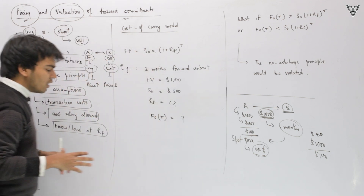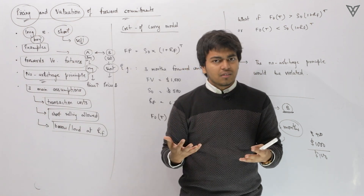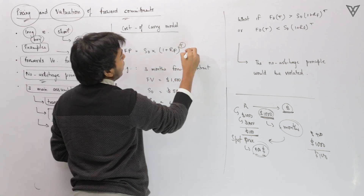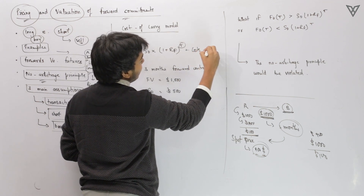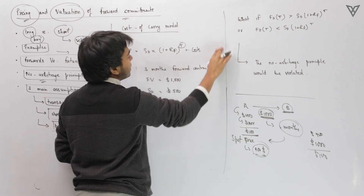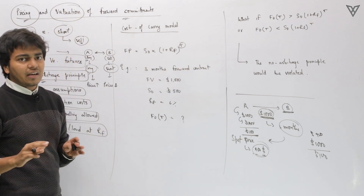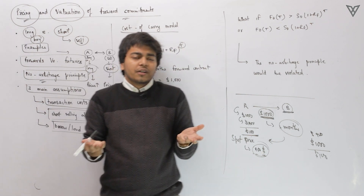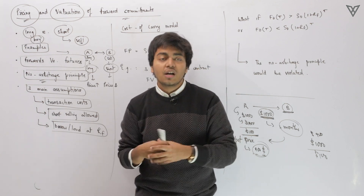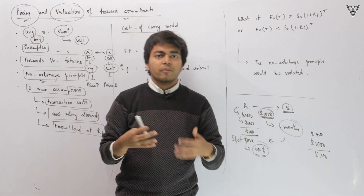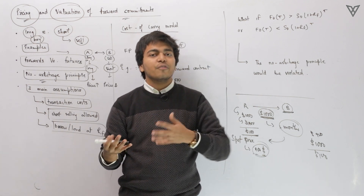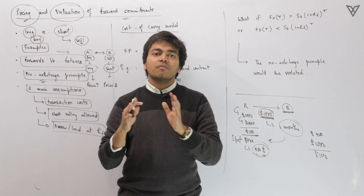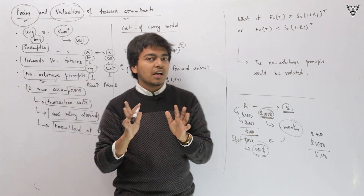How do you calculate the forward price? The formula starts with the spot price multiplied by the risk-free rate to the power t. If there were any costs involved you would add that, and if there were any benefits involved you would subtract that. For simplicity we assume no cost or benefit, but in reality there could be storage costs for physical commodities, dividends for stocks, or coupons for bonds. We need to take present values of those costs and benefits.